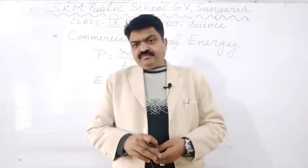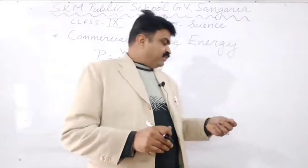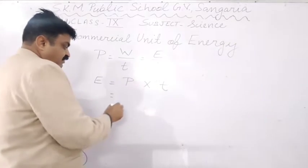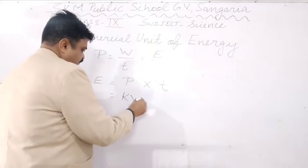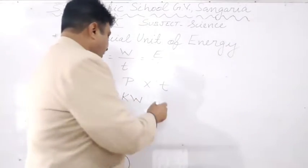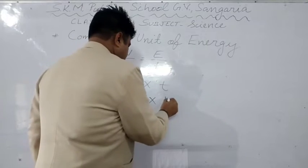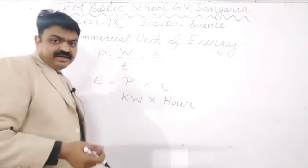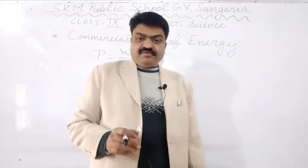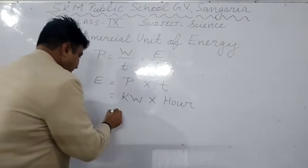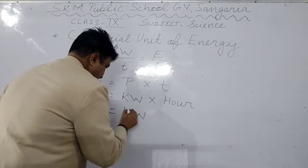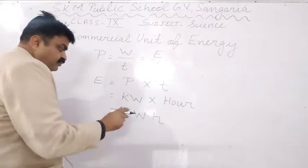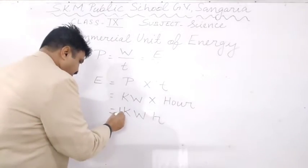So what is the commercial unit of power? It is kilowatt. And when we apply the formula Energy = Power × Time using the commercial units, we get the commercial unit of energy: kilowatt hour.